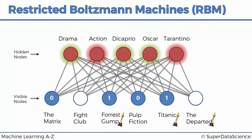How will the RBM reconstruct Fight Club? It goes through all nodes and checks connections based on weights learned during training. Fight Club is not drama, but it is action — so the action node lights up, and that node is red. Fight Club doesn't have DiCaprio, hasn't won an Oscar, and Tarantino is not the director. Based on this one connection to the red action node, Fight Club is predicted as a movie this person is not going to like — recommendation: no.